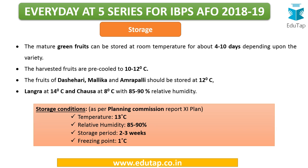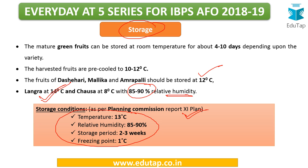For storage: harvested fruits are pre-cooled to 10 to 12 degrees Celsius. As per the Planning Commission's 11th Plan report, the recommended storage temperature is 13 degrees Celsius, relative humidity is 85 to 90%, storage period is nearly 2 to 3 weeks, and the freezing point is 1 degree Celsius.